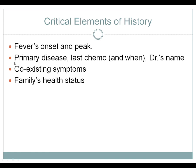Document in your history — particularly in an emergency room or new patient setting — the primary disease, the last chemotherapy received, when it was given, and who the oncologist is so you can contact them for more data. You also want to know about coexisting symptoms: shortness of breath, chills, fatigue. And note the family's health status — if siblings have colds, a viral infection is more likely; if everyone is healthy, be more suspicious of bacterial disease.